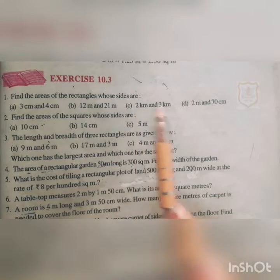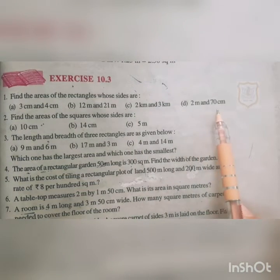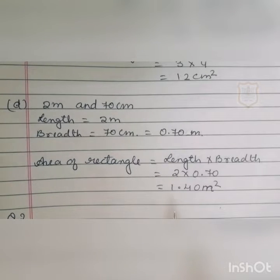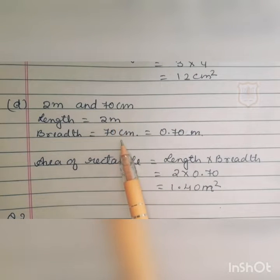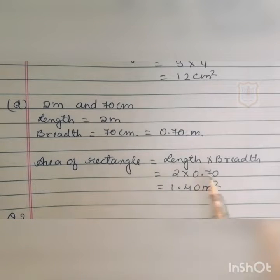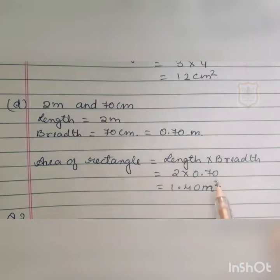Parts B and C you will do on your own. Now we come to part D: 2 meters and 70 cm. Here, 2 meters is the length and 70 cm is the breadth. We will convert 70 cm to meters by dividing by 100, giving 0.70 meters. So the area of the rectangle is L × B — length is 2 meters and breadth is 0.70 meters. Multiplying 2 by 0.70 we get 1.40 square meters.